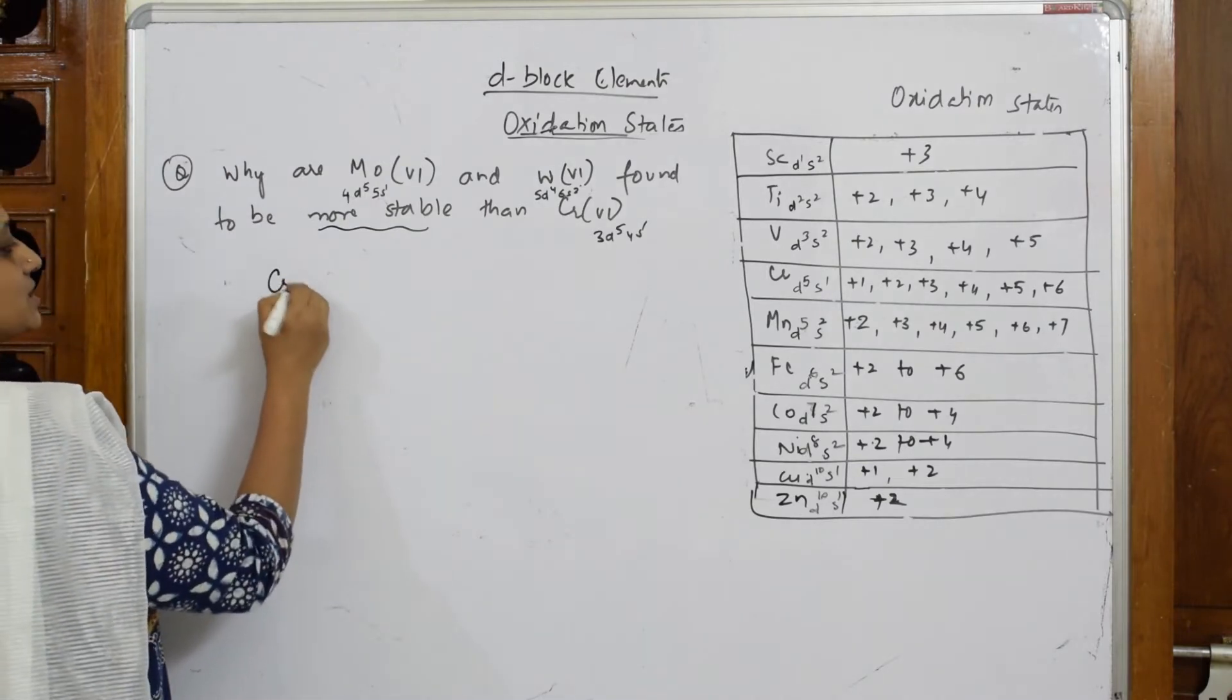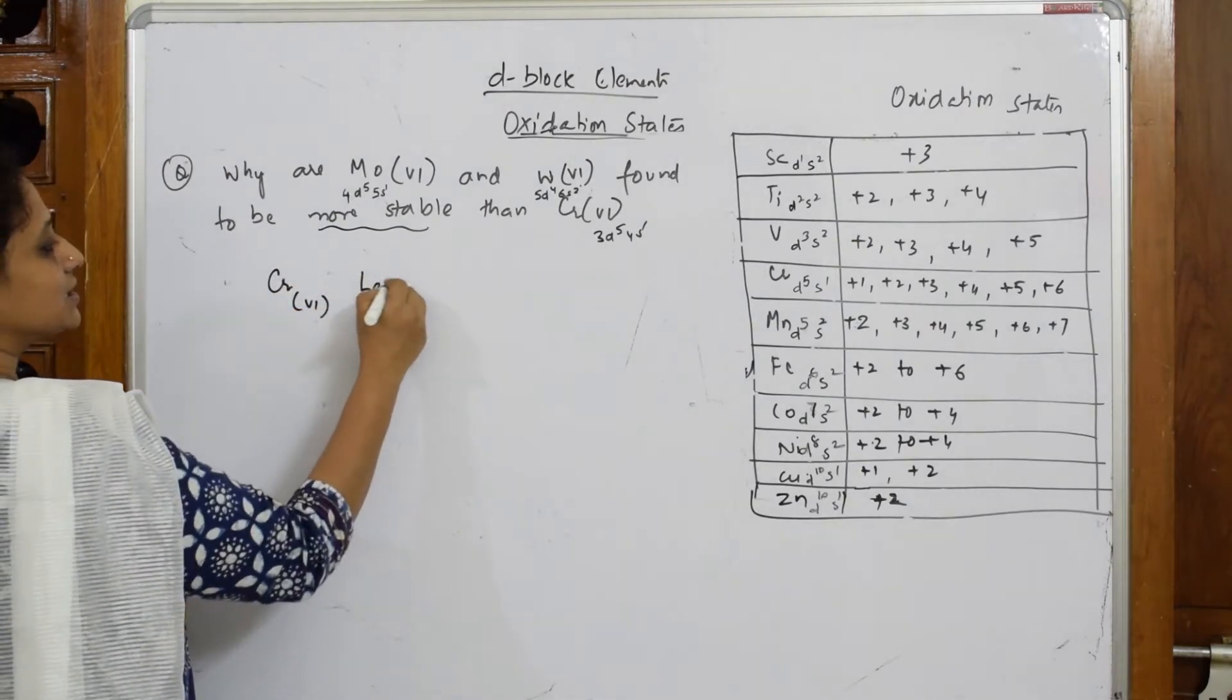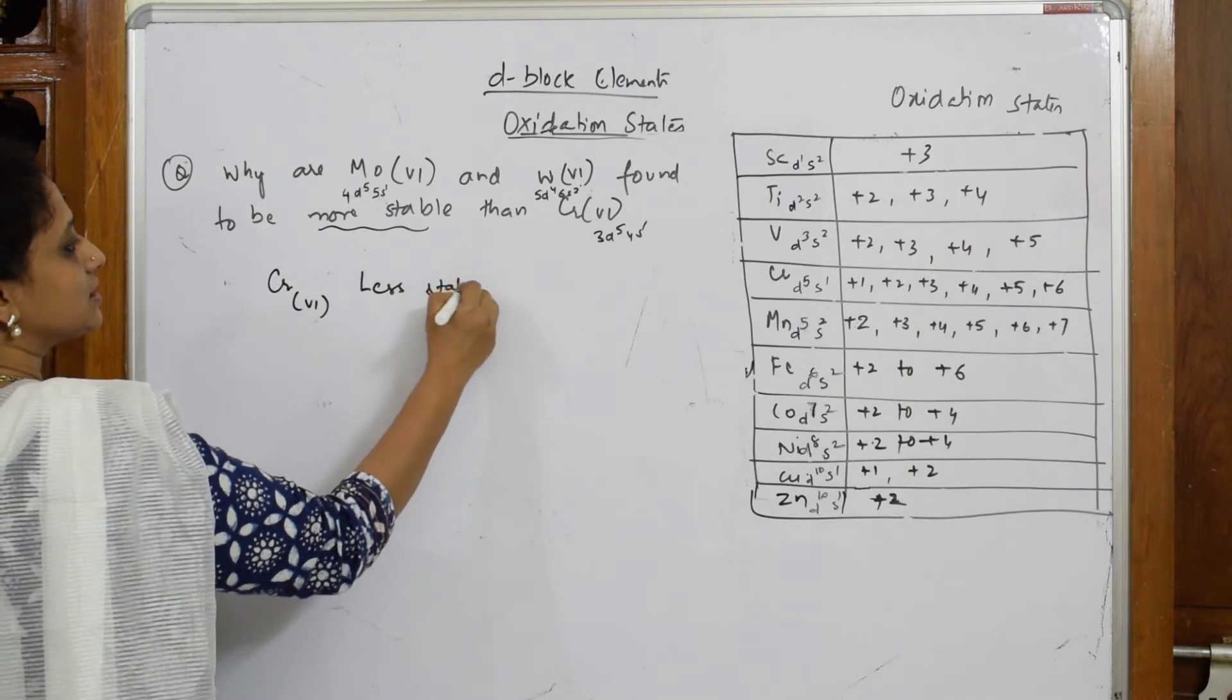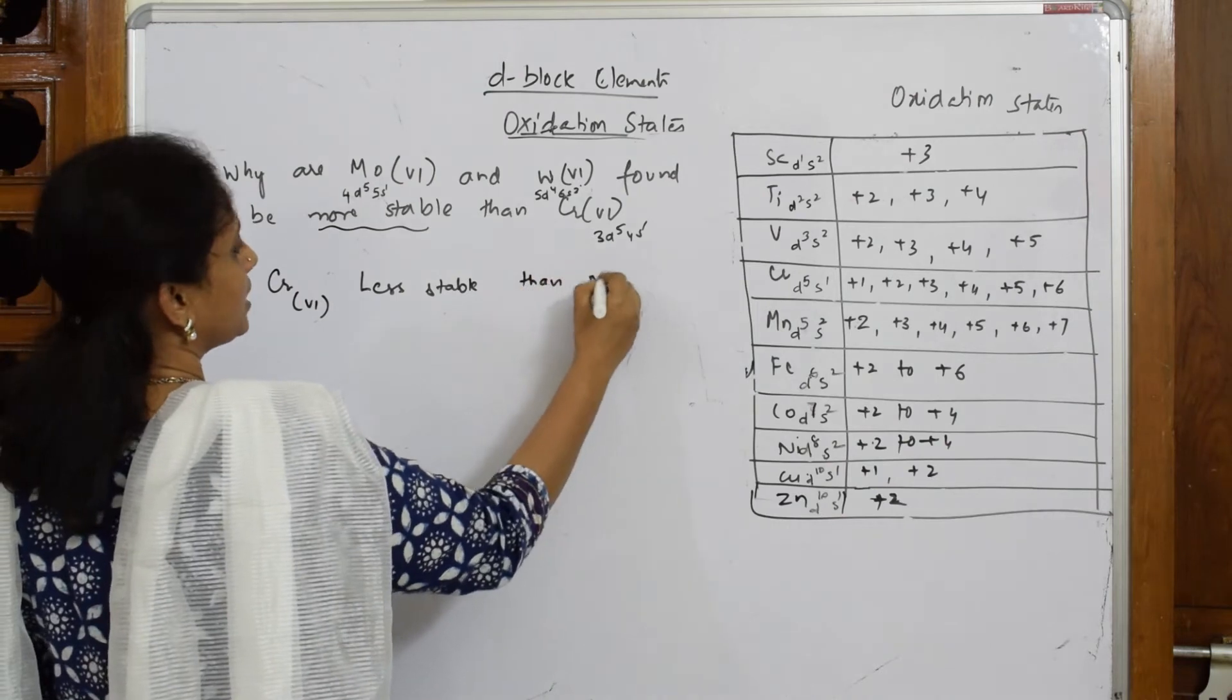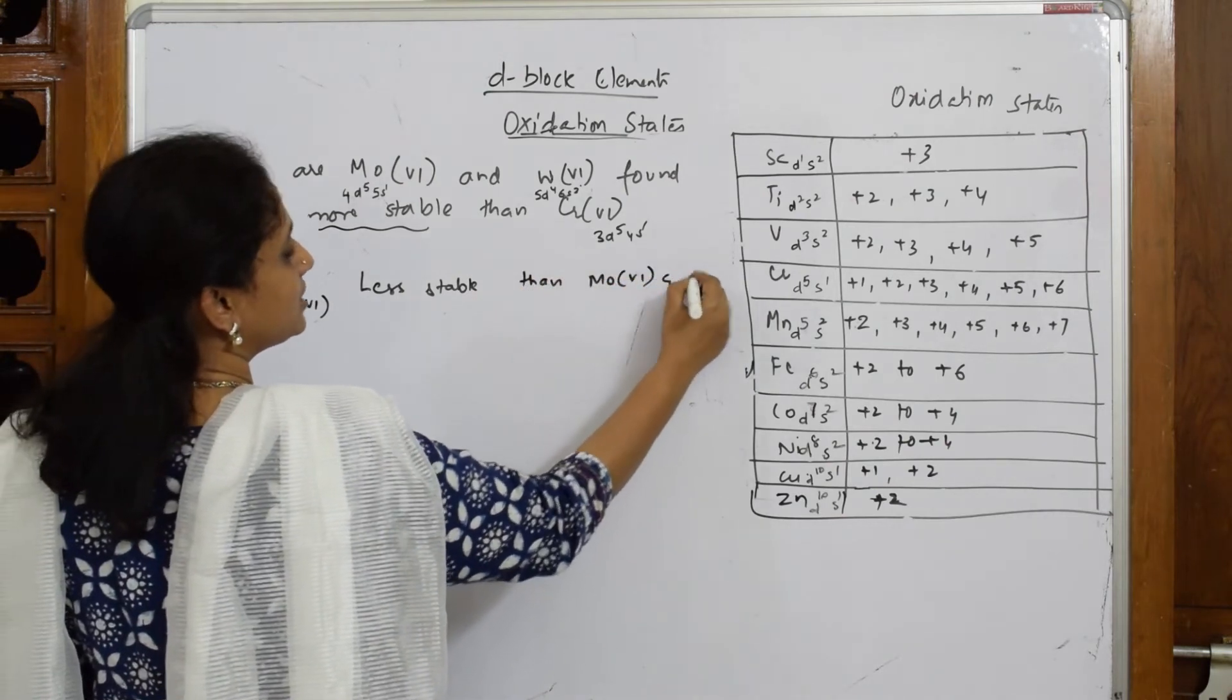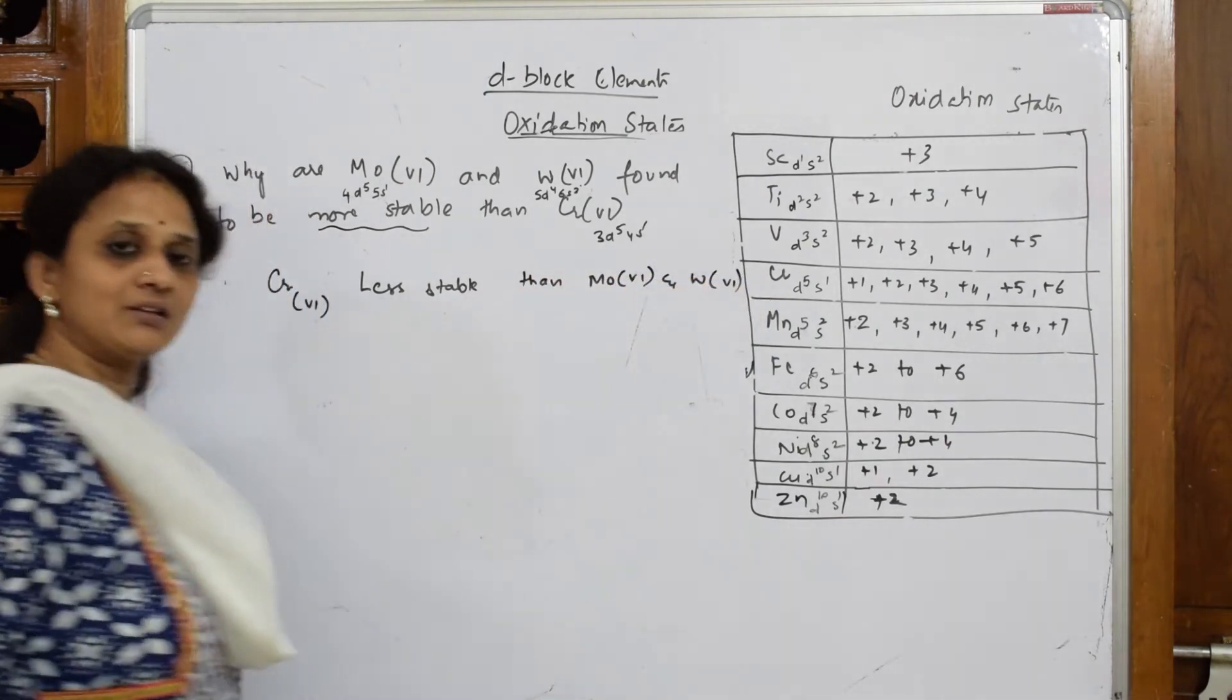question is given. The concept is Cr(6) is less stable, meaning the formation is less stable than Mo(6) and W(6). I have to prove this. So let us write